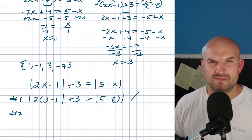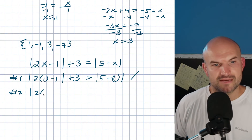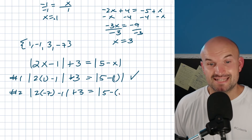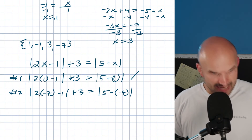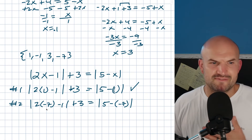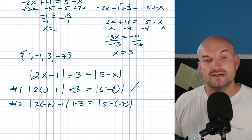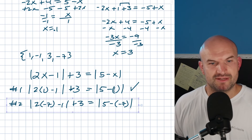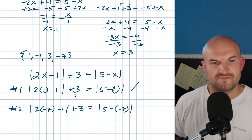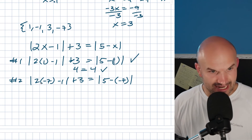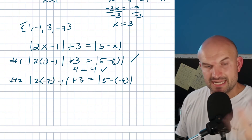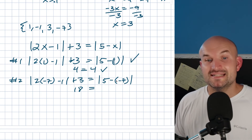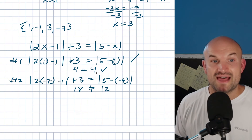Now let's check x equals negative 7. We compute the absolute value of 2 times negative 7 minus 1, plus 3. That's the absolute value of negative 15, which is 15, plus 3 equals 18. On the right, the absolute value of 5 minus negative 7 is the absolute value of 12, which is 12. Since 18 does not equal 12, that solution is extraneous.